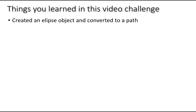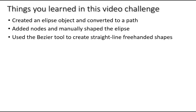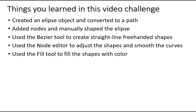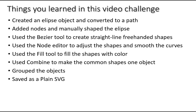In this video challenge you learned how to create an ellipse object and convert it to a path, then add nodes and manually shape that ellipse. We used the Bezier tool — a new tool — to create straight-lined freehand shapes using straight line segments, then used the node editor to adjust those shapes and smooth the curves around the jack-o-lantern's mouth and added a tooth. We used the fill tool to fill the shapes with color, then used Combine to make the common shapes one object — so the eyes, nose, and mouth became one object instead of four separate ones. Then we grouped the objects and saved them as a plain SVG file, and imported them into Design Space.